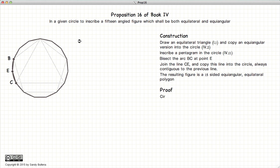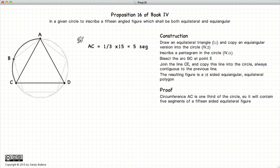Now to prove it is what we say it is, let's go back and look at our equilateral triangle and our pentagon. Now an equilateral triangle divides the circle into three equal pieces.